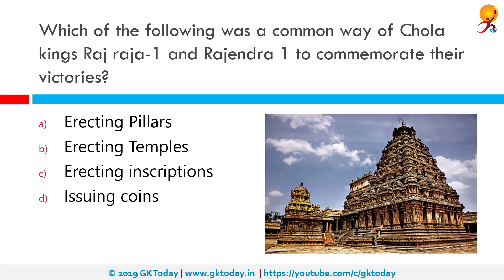Which of the following was a common way of Chola kings Raja Raja I and Rajendra I to commemorate their victories? The correct answer is by erecting temples.